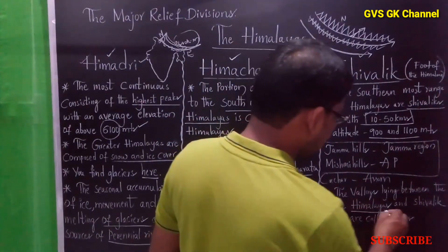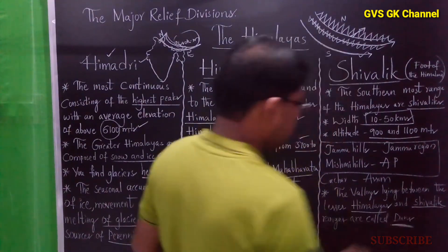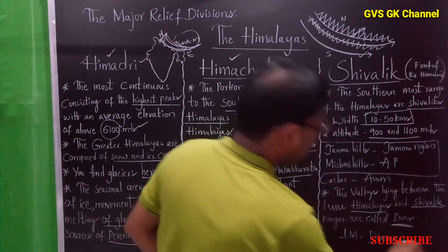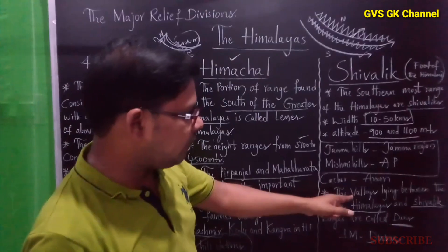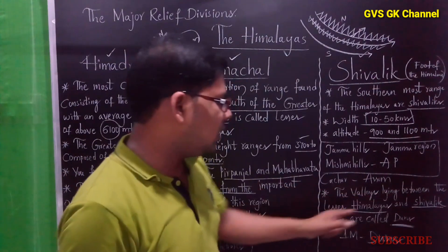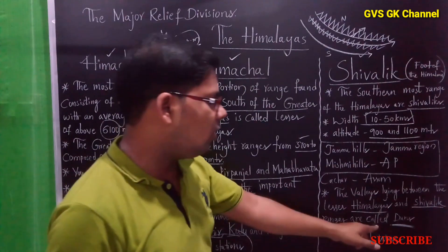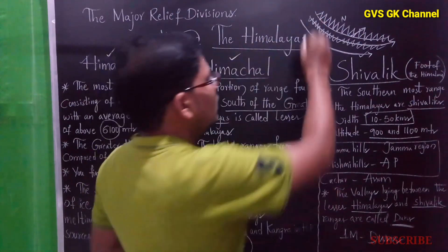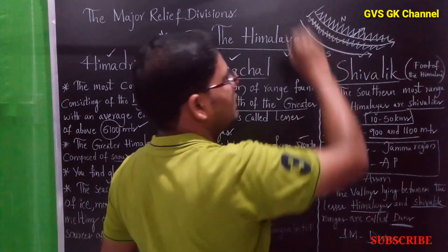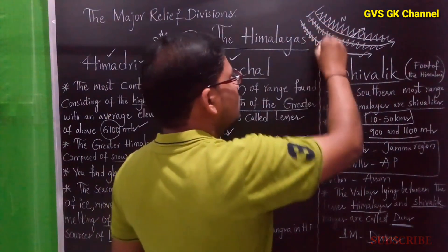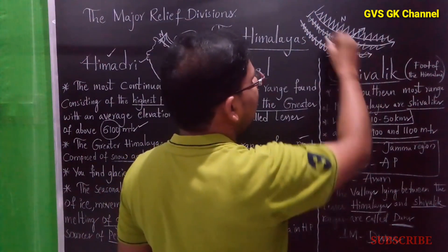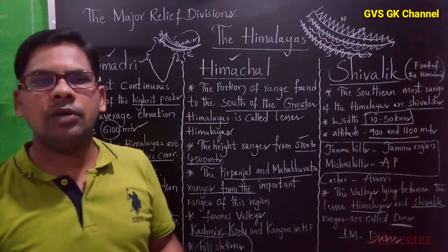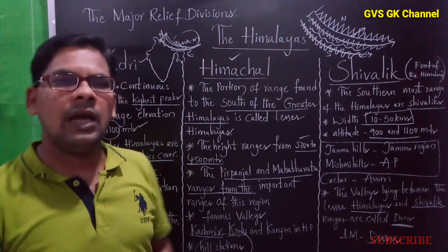The valleys lying between the Lesser Himalayas and the Shivalik are called Doons. The definition: valleys lying between the Lesser Himalayas and the Shivalik ranges are called Doons. Between the lesser Himalayas and the Shivalik, we have some valleys — these valleys are called Doons. Examples of Doons are Kotli Dun, Patli Dun, and Dehra Dun.